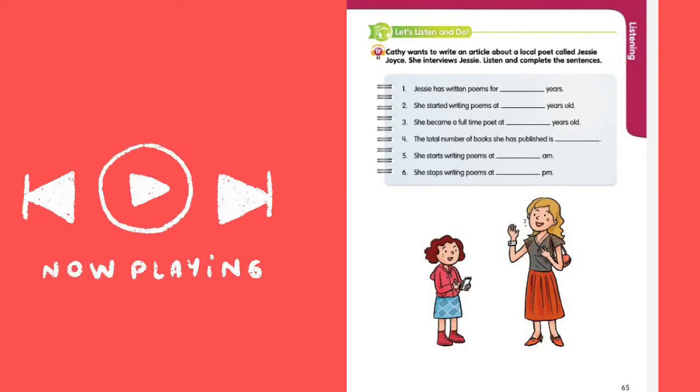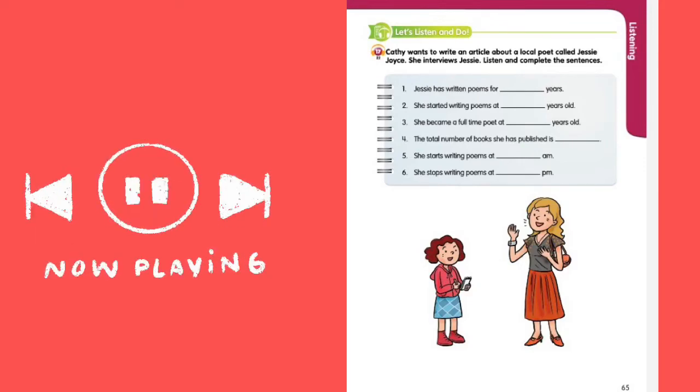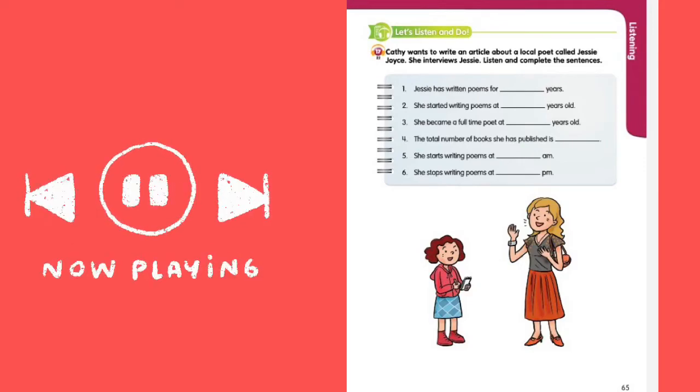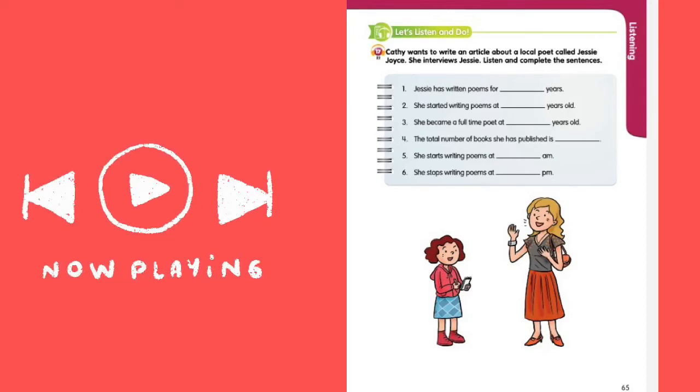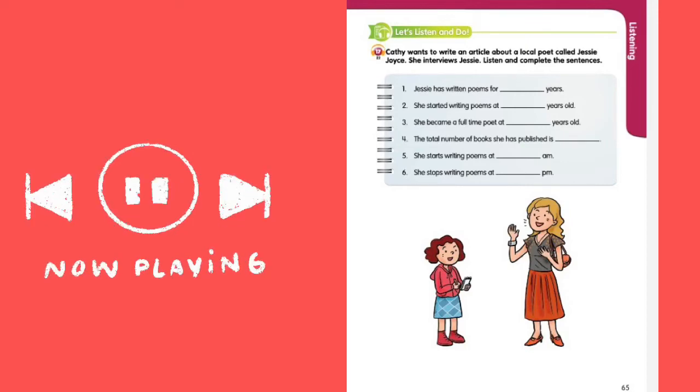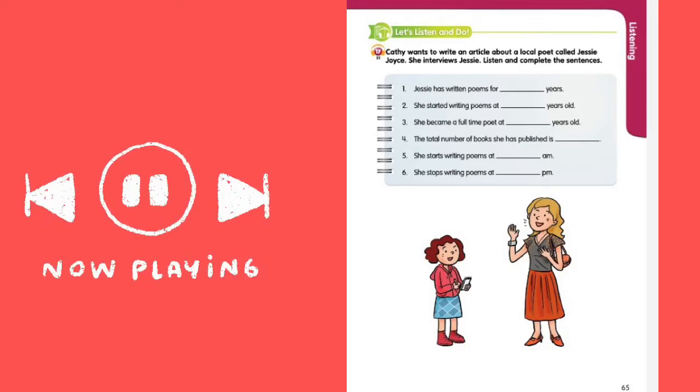When did you become a full-time poet? I became a poet at 22 years old. Before that, I worked as a waitress and wrote poetry only during my free time. How many books have you published? I have published 20 books.